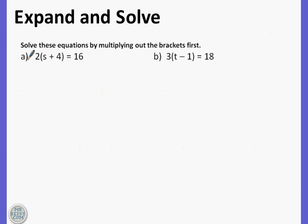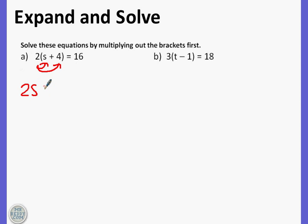We have two examples here, two equations. For the first one, we first expand the brackets. As we've seen in the previous videos, we do two times s and two times four. That will equal two s, and because there's an add sign, two times four equals eight.